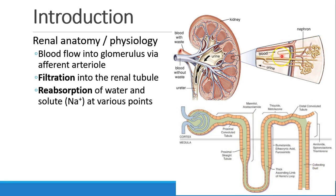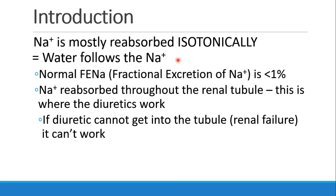So here we see the nephron. And then finally, the nephron will drain into collecting ducts and go to the urine, whereas the blood flow that went into the glomerulus comes out the other side as venous blood, which eventually drains into the renal vein. Again, just a reminder — sodium mostly is reabsorbed isotonically, which means that when sodium moves, water follows the sodium.